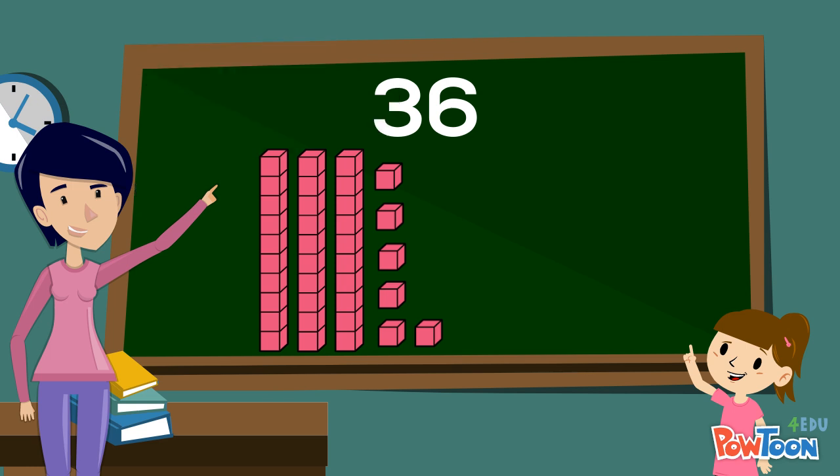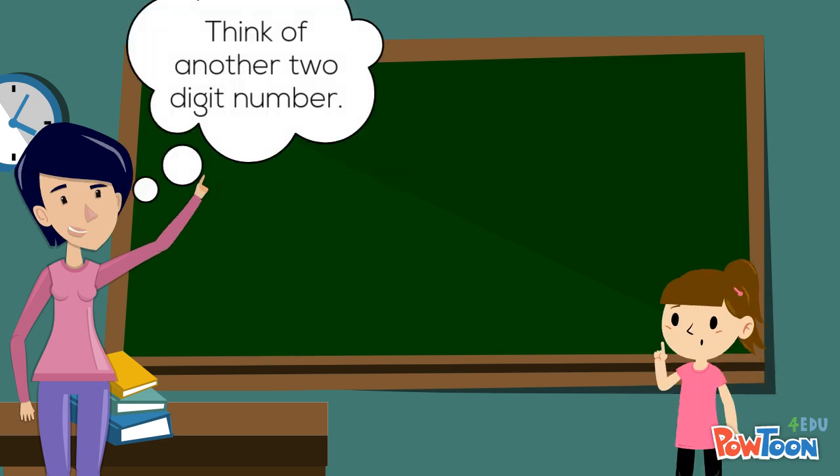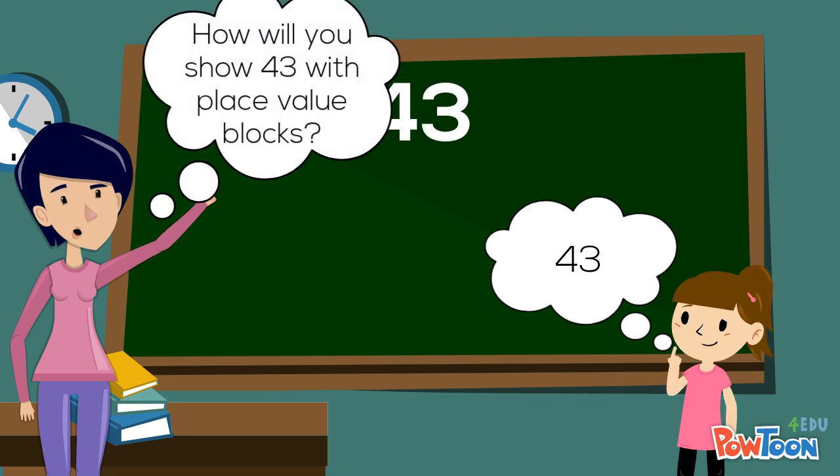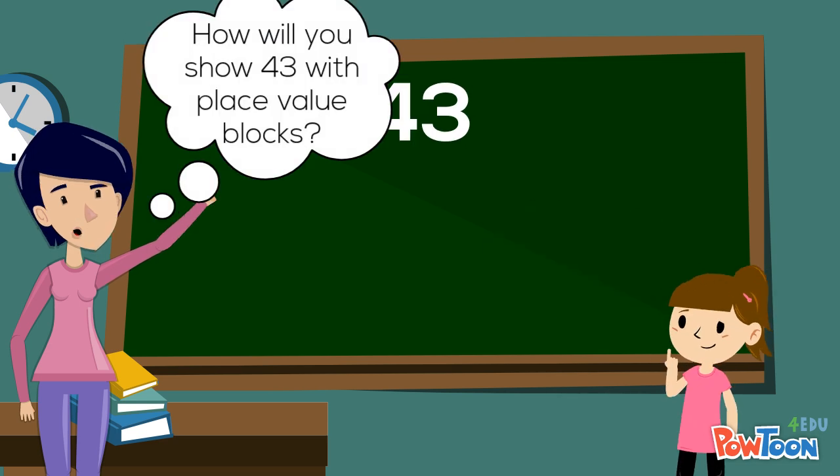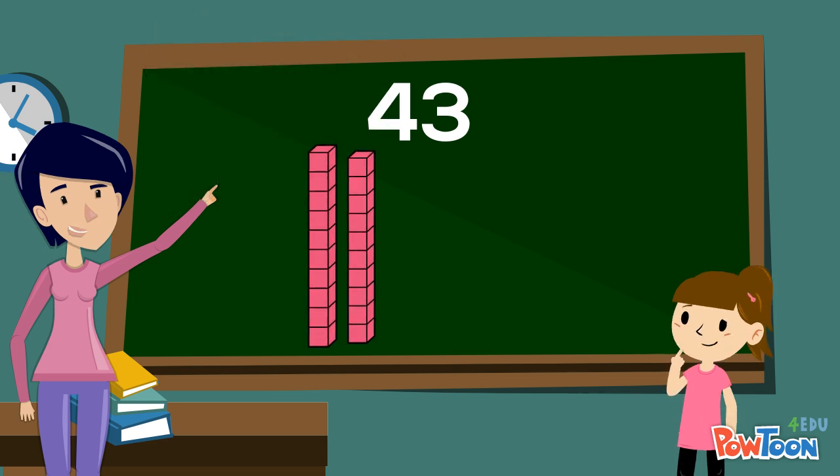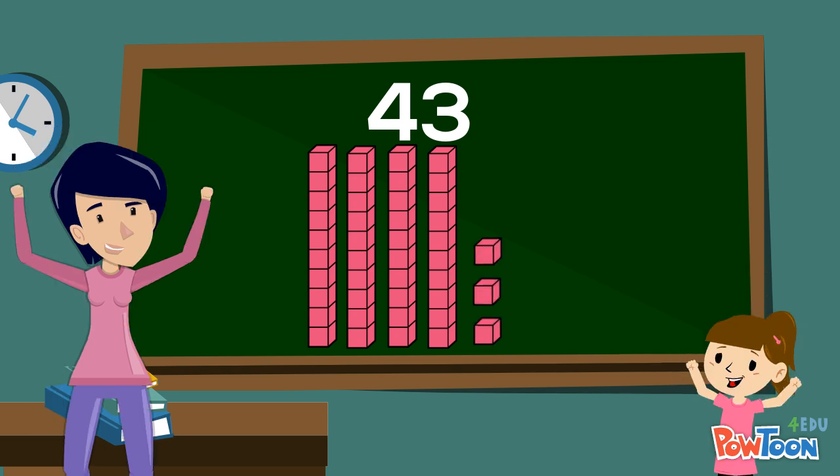Think of another two-digit number. What number did you think of? 43. How will you show 43 with place value blocks? I will have four tens and three ones. One, two, three, four tens. One, two, three ones. That's right.